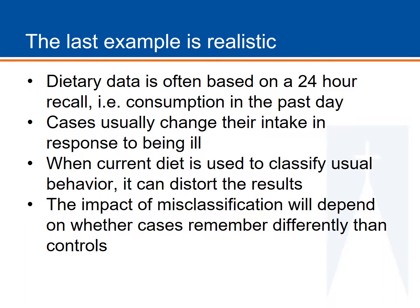The last example where the odds ratio actually goes up is quite realistic because dietary data is often based on a 24-hour recall. It is common that cases who have been newly diagnosed with a disease will have changed their intake as a result of the disease. So it is not strange that cases who might really have been eating a high fat diet would report consuming a low fat diet in the past 24 hours, even though this doesn't reflect their high fat intake exposure that relates to the illness. The impact of misclassification when it comes to dietary data will depend on behavior and also recall.